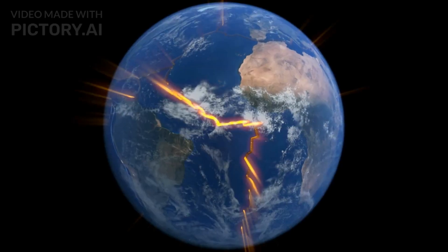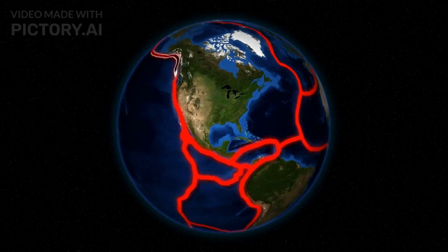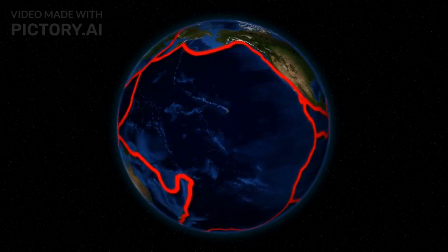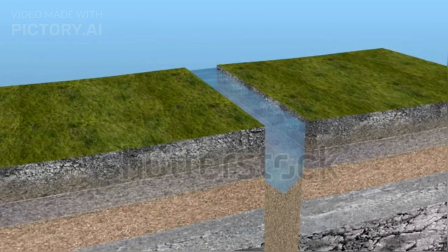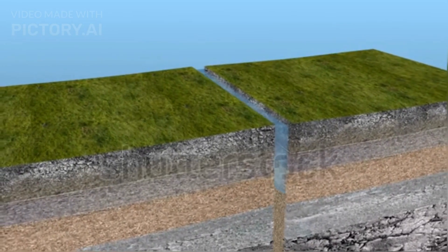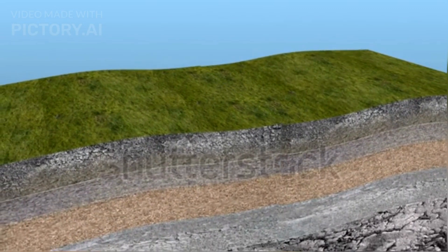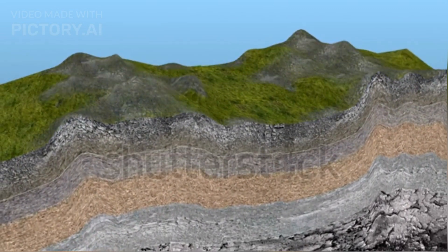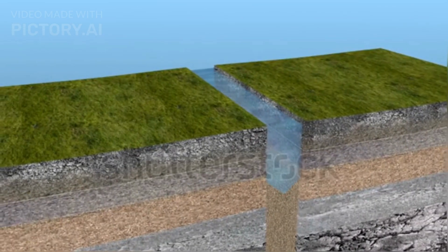The major types of plate boundaries where earthquakes occur include convergent boundaries, where tectonic plates move toward each other. Subduction zones, where one plate is forced beneath another, are common locations for powerful earthquakes. The stress builds up as the subducting plate is pushed deeper into the Earth's mantle until it is released suddenly in the form of an earthquake.